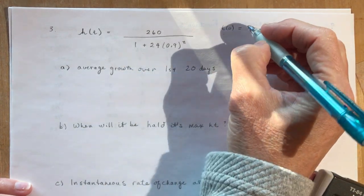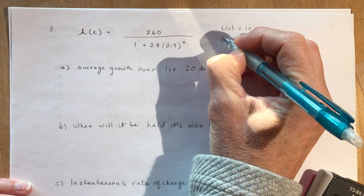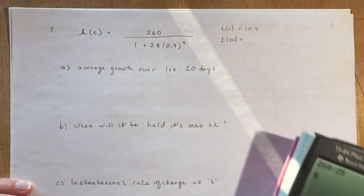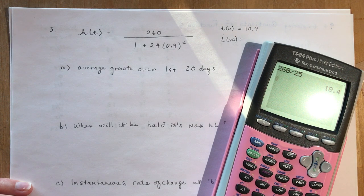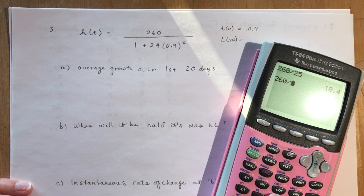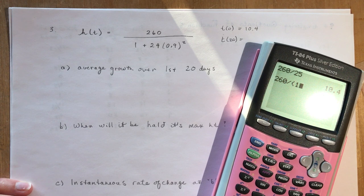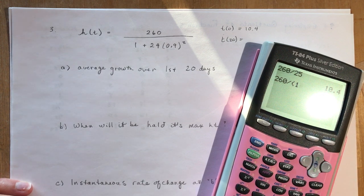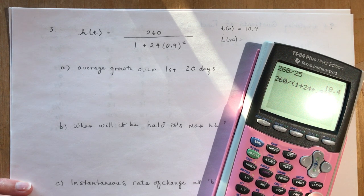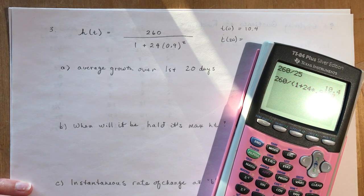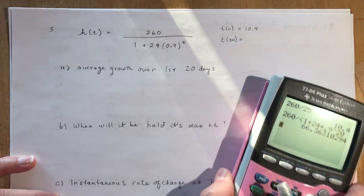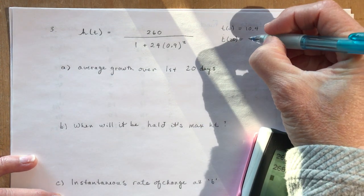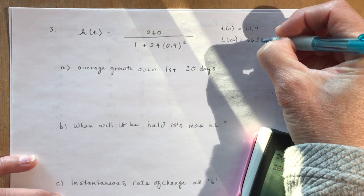So I'm going to do 260 divided by 25, and that's going to give me 10.4. So at time zero it was 10.4 centimeters. And at time 20, I put in 20 for my little value here. So I have 260 and I'm dividing that by—don't forget a bracket here because if you just put in divided by 1 plus this, it's going to divide it by 1 and then add. You don't want to do that, so make sure you put brackets.